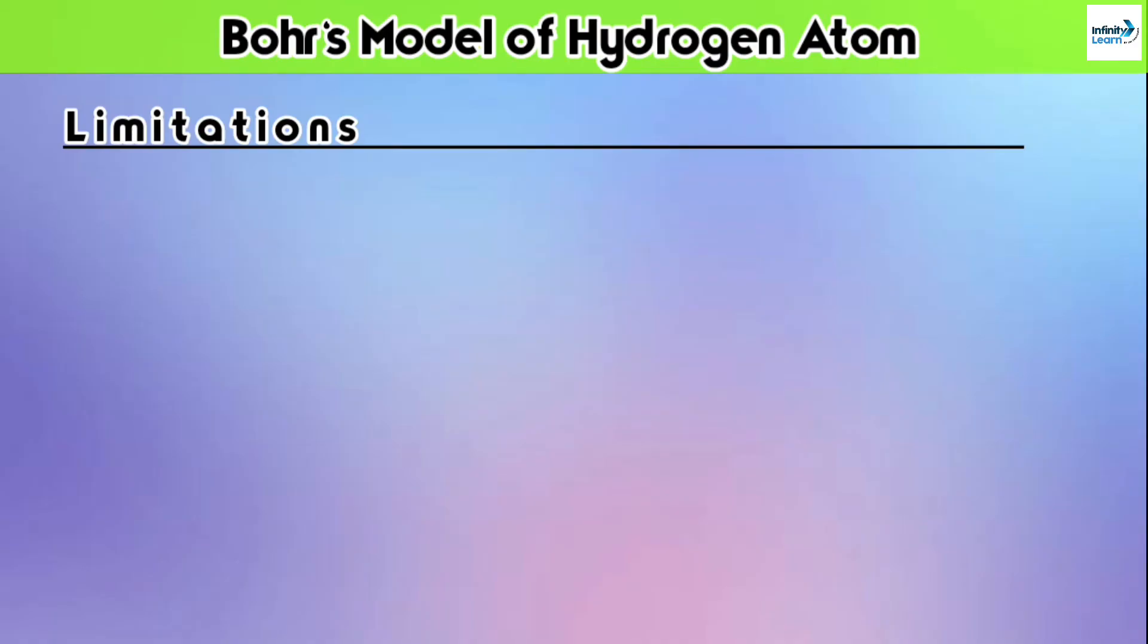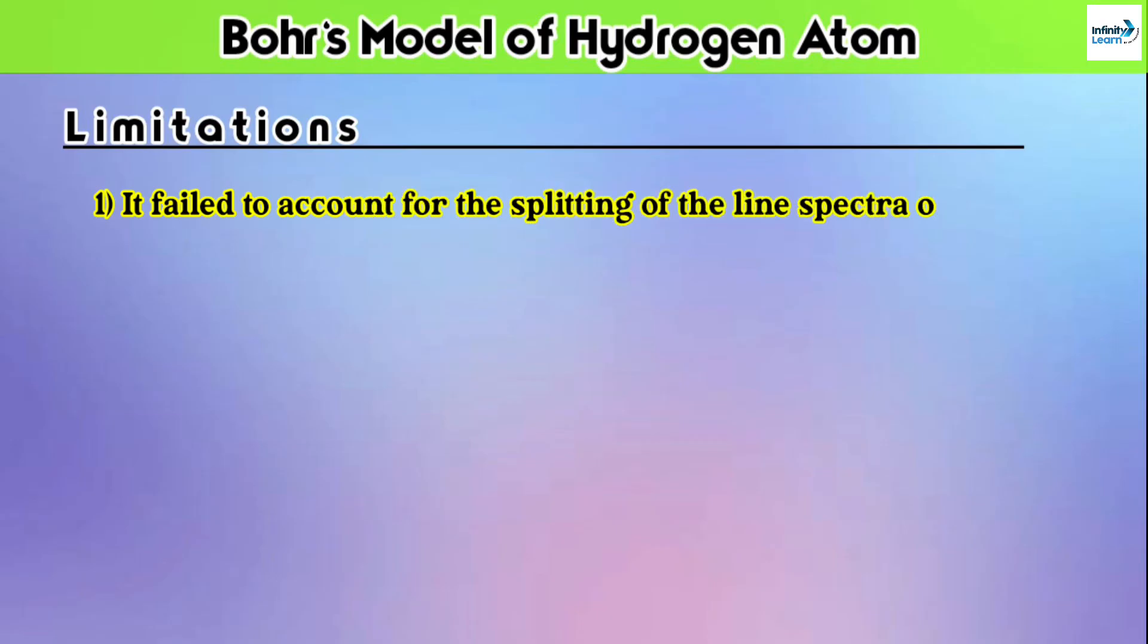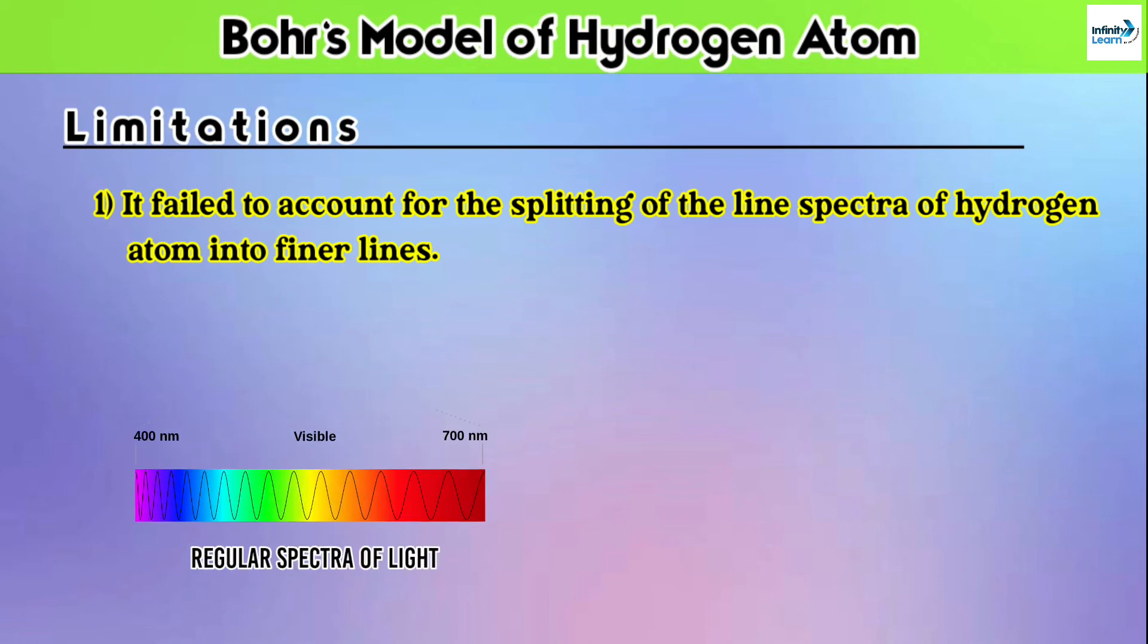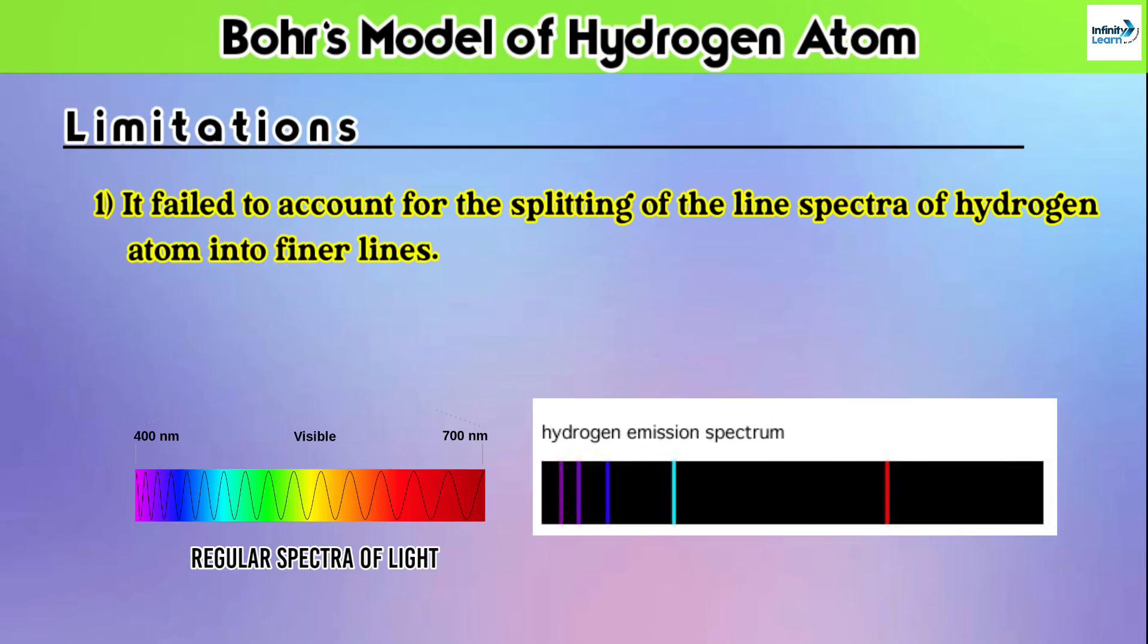Now let's move to the limitations of this Bohr's model. The first limitation is: it failed to account for the splitting of the line spectra of hydrogen atom into finer lines. You already know that a regular spectra of light looks like this, but if we pass white light through a hydrogen atom and then pass it through a prism, as a result it will form this kind of spectra, which is very different from the normal spectra of light.